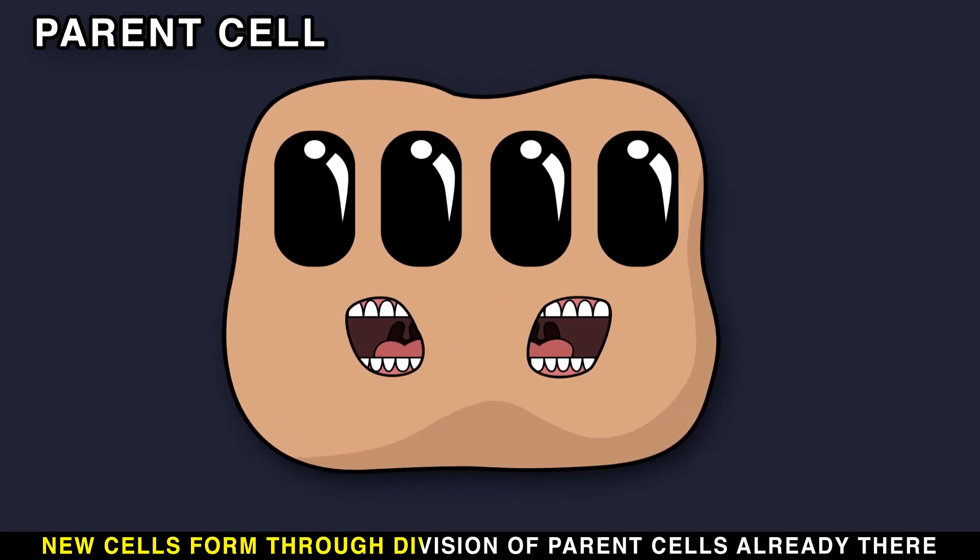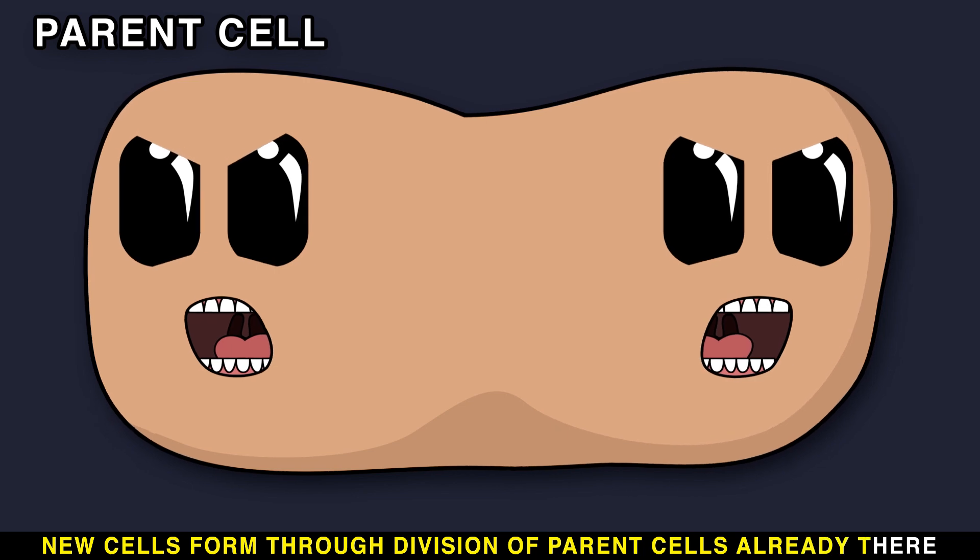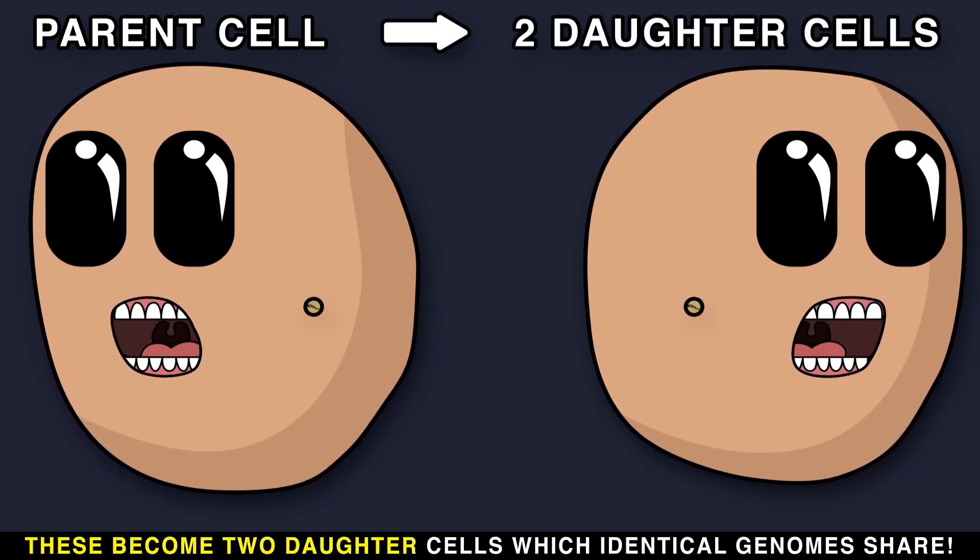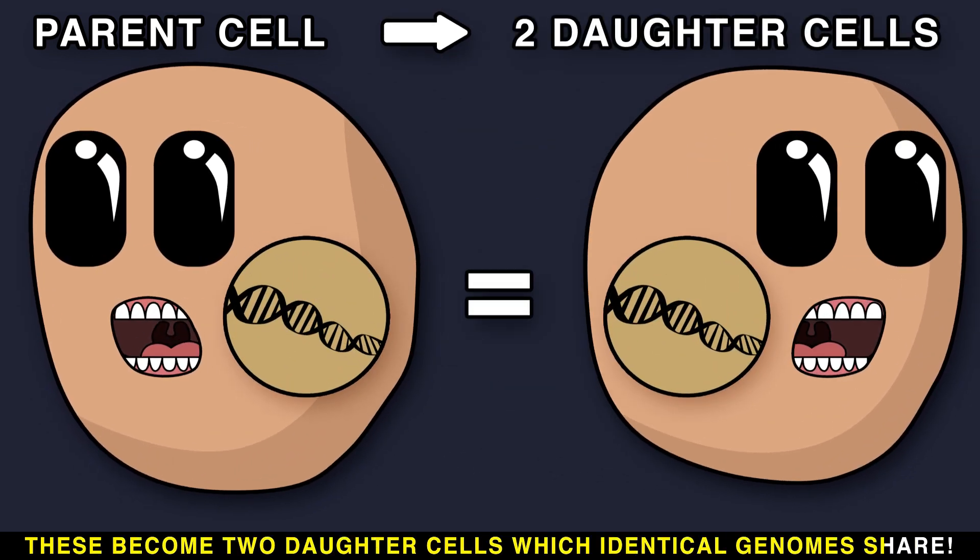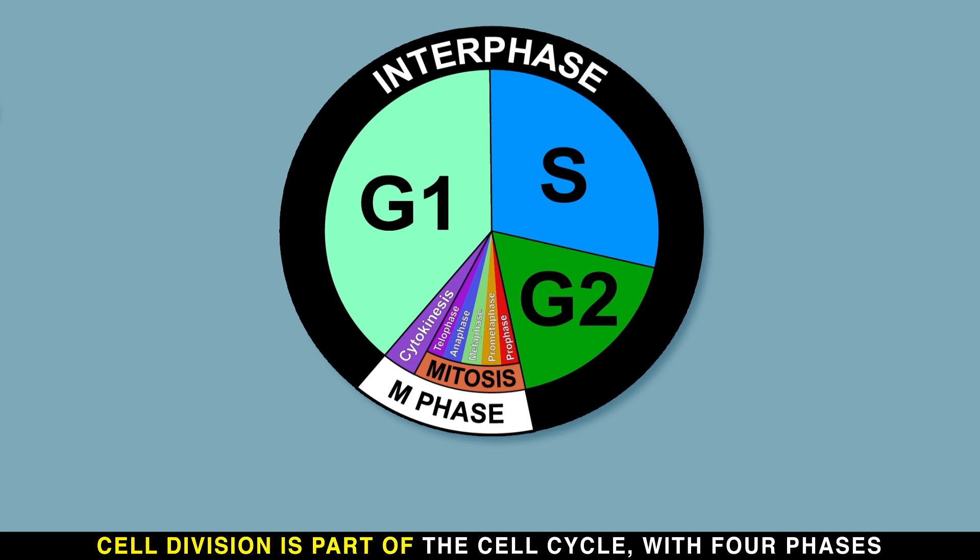New cells form through division of parent cells already there. These become two daughter cells which share identical genomes. Cell division is part of the cell cycle with four phases.